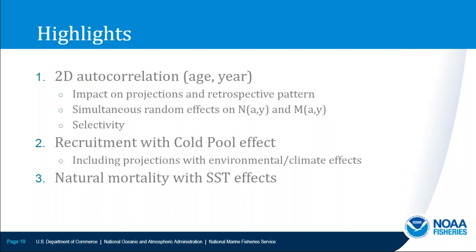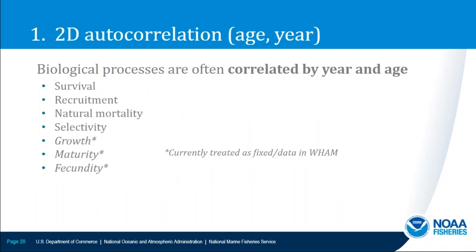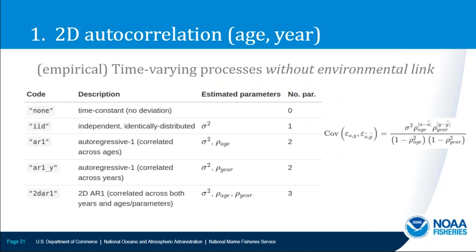2D autocorrelation by age and year is motivated by the fact that biological processes are often correlated by year and age — things like survival, recruitment, natural mortality, selectivity, growth, maturity, and fecundity in an assessment model. Growth, maturity, and fecundity are currently treated as fixed in WAM, but we can estimate 2D autocorrelation on survival, recruitment, natural mortality, and selectivity. This is the empirical approach — allowing processes to vary in time without an environmental link.